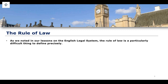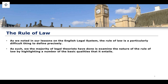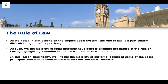As we noted in our lessons on the English legal system, the rule of law is a particularly difficult thing to define precisely. The majority of legal theorists, instead of trying to give a simple definition, try to highlight a number of the basic qualities that the rule of law entails — looking at the different things it encompasses rather than offering a specific and strict definition.